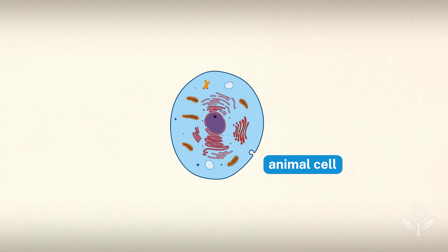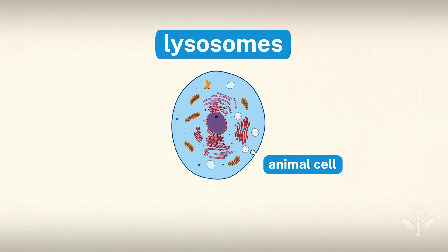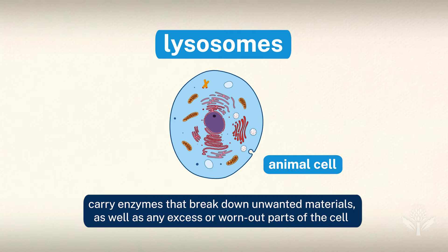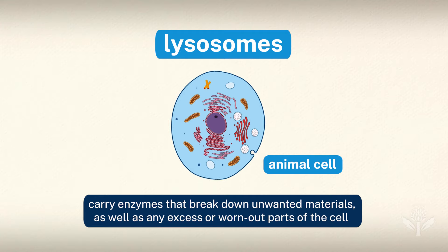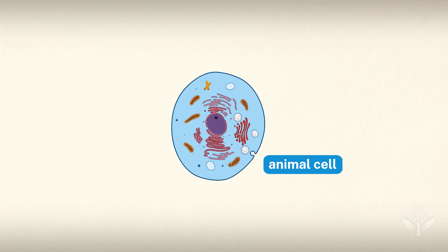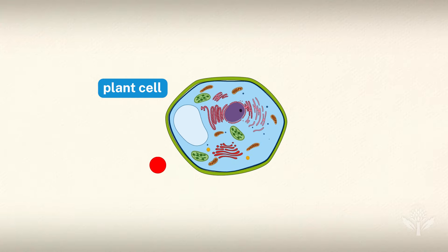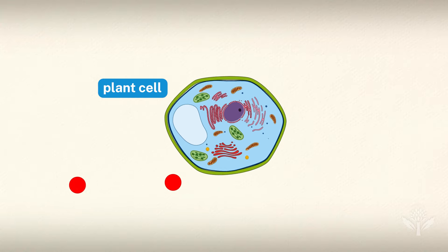Unlike plant cells, animal cells contain lysosomes, which serve as the garbage disposal of the cell. Lysosomes carry enzymes that break down unwanted materials, as well as any excess or worn-out parts of the cell. Plant cells don't need lysosomes, because their cell walls are capable of stopping most unwanted materials from entering the cell.